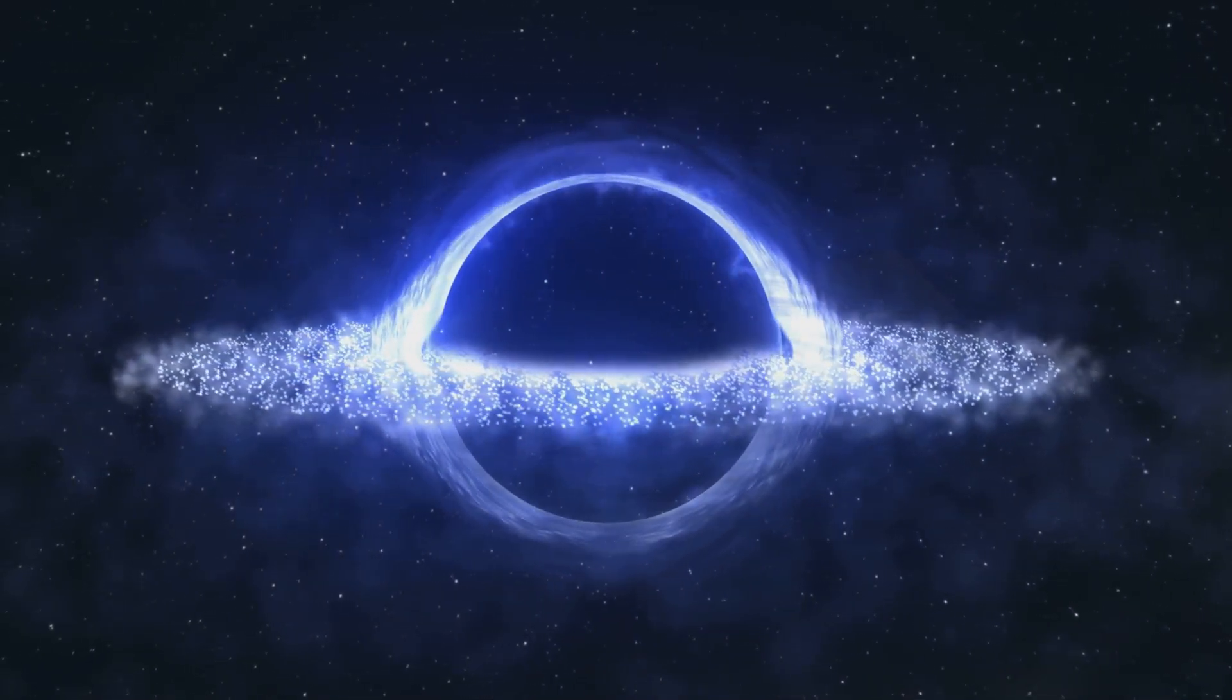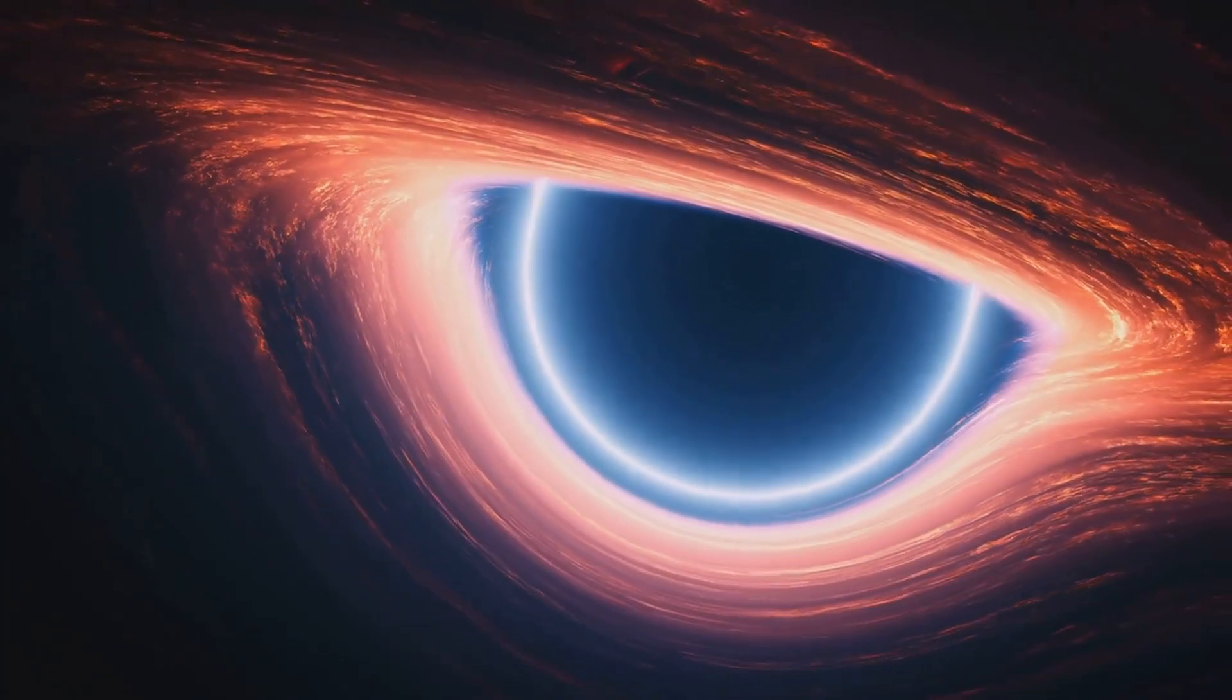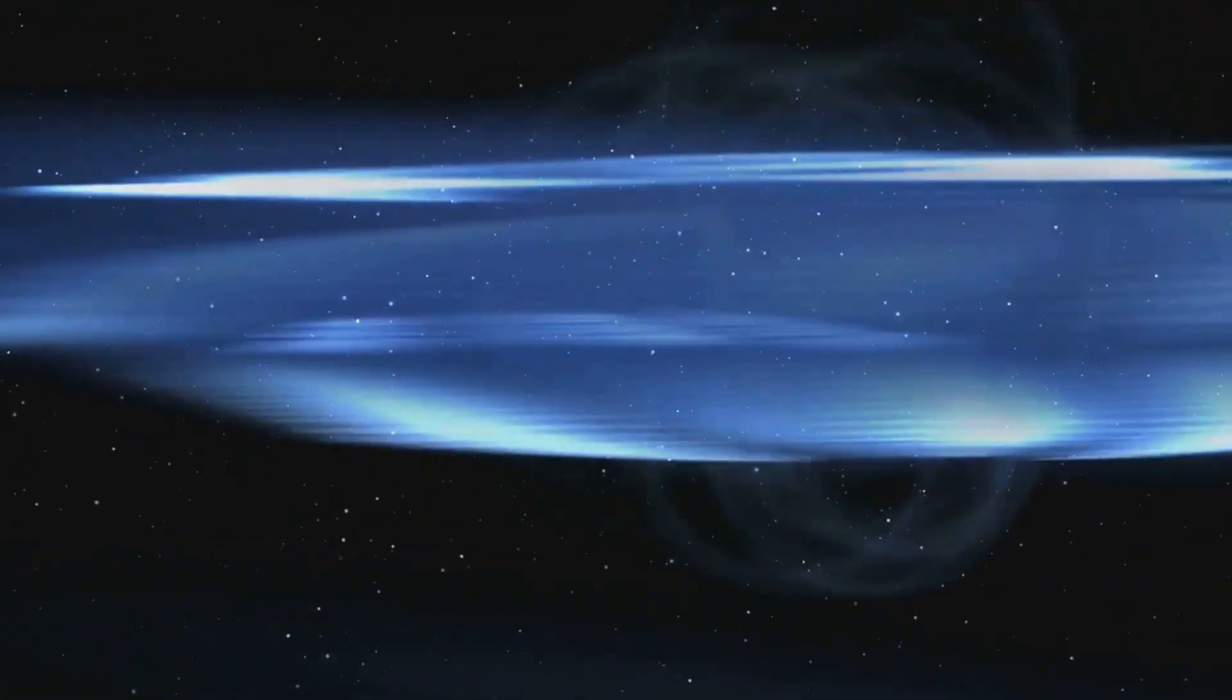Quasars are black holes spewing tremendous amounts of energy as they consume matter. In fact, this black hole is 300 trillion times brighter than the sun. The light we see from this quasar takes 12.1 billion years to reach us, so we're seeing it as it was just as the universe was very young.